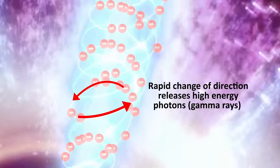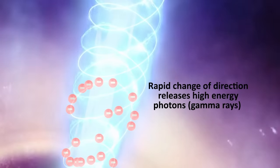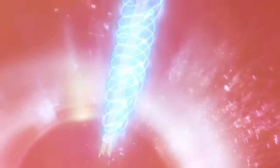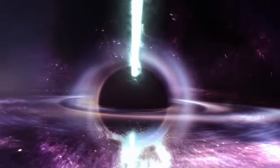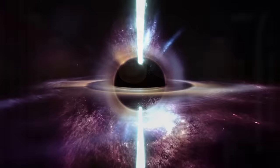Gamma rays can also form if extremely fast electrons crash into photons. The transfer of energy to the photon can cause it to gain energy and become a gamma ray.